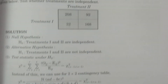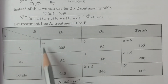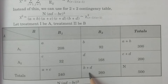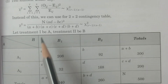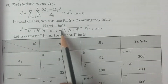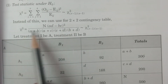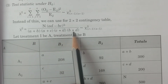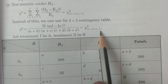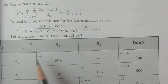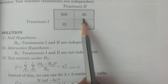For a 2 by 2 contingency table with cell frequencies a, b, c, d, the simplified formula is: chi-square equals N times (AD minus BC) whole square, divided by (a+b)(a+c)(c+d)(b+d), which follows chi-square with (r-1)(s-1) degrees of freedom. This is the chi-square calculated value formula under H0.